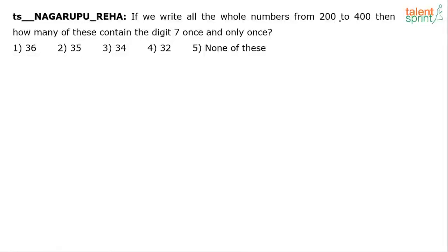If you write all the whole numbers from 200 to 400, then how many of these contain the digit 7 once and only once? So, if you write all the whole numbers from 200 to 400, the range is 200 to 400, then how many of these will have the digit 7 once and only once?